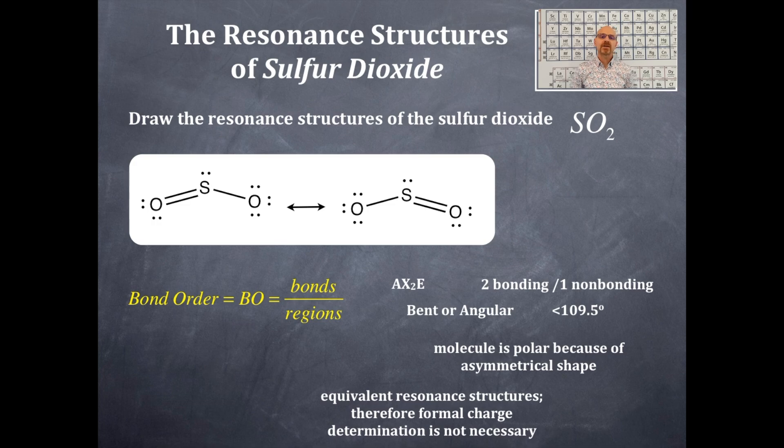Now I'm going to do something else here and that is determining the bond order. So the bond order is the number of bonds divided by the number of bonding regions. You can take any resonant structure of the two and look at the central element.